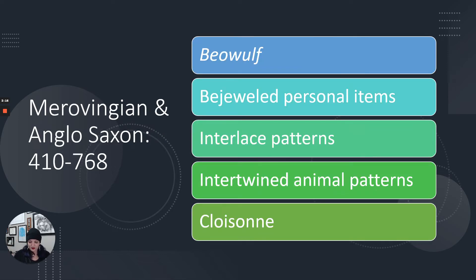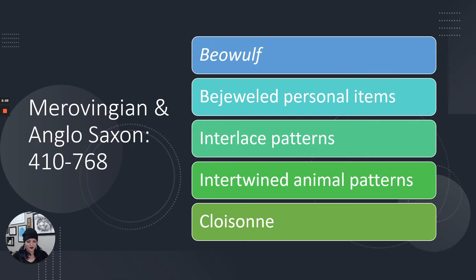The Romans thought that the Huns, Vandals, Franks, Goths, Visigoths, Vikings, Moravians, Celts, Ostrogoths, Anglo-Saxons, Hiberno-Saxons, and Lombards — they thought all of those people were barbarians.